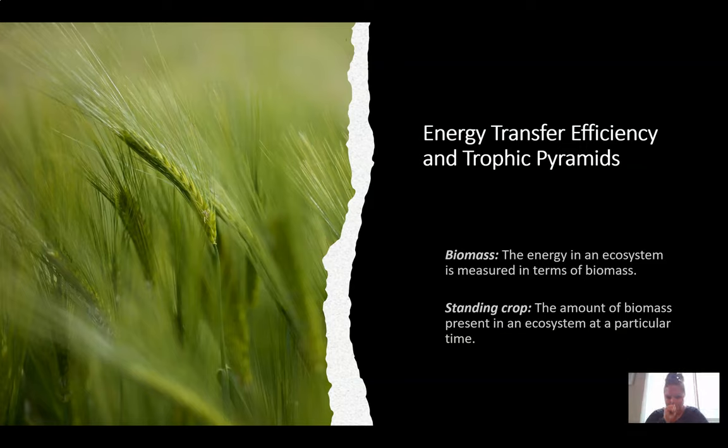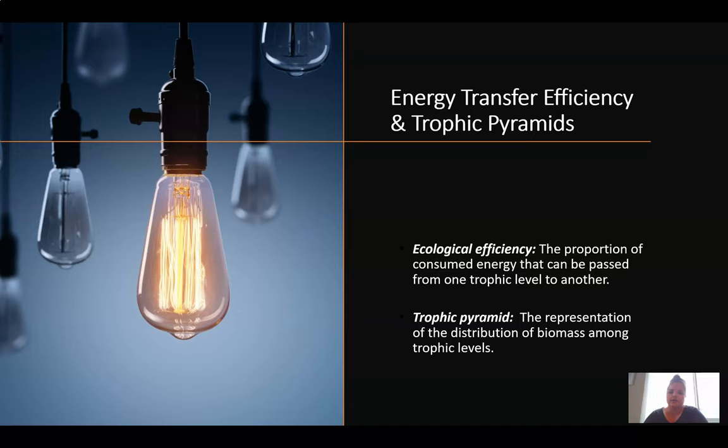Energy transfer efficiency and trophic pyramids. We have something called biomass, which is the energy in an ecosystem measured in terms of its biomass. The standing crop is the amount of biomass present in an ecosystem at a particular time. This gives us an indication as to whether the ecosystem is thriving or at a detriment. Ecological efficiency is the proportion of consumed energy that can be passed from one trophic level to another. The trophic pyramid is the representation of the distribution of biomass among the trophic levels.